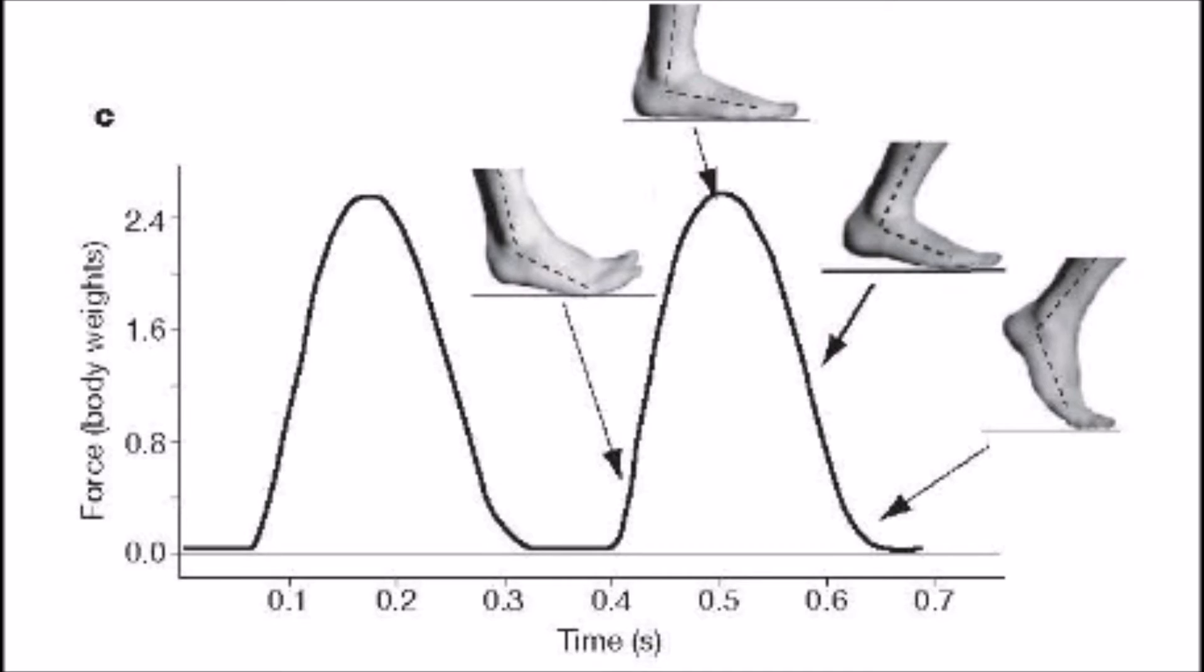So why is the impact transient gone or abolished in a forefoot strike landing during running? There are many mechanical determinants of forefoot running that allow for a smoother, less forceful exchange of the body weight with the ground.